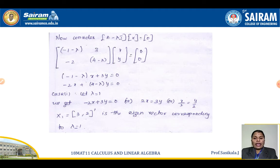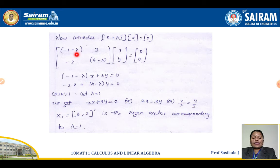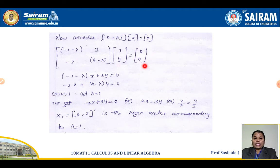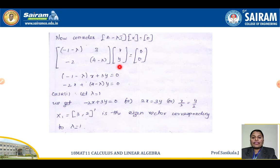Now we find the eigenvectors. The general equation is (A - λI)x = 0, which gives the system: (-1 - λ)x + 3y = 0 and -2x + (4 - λ)y = 0.